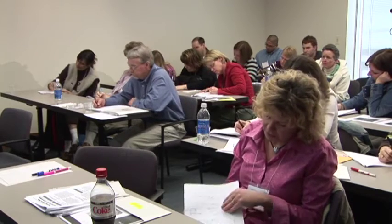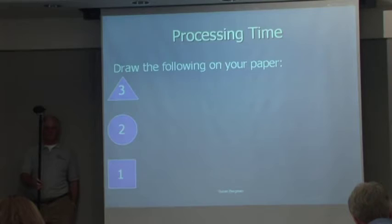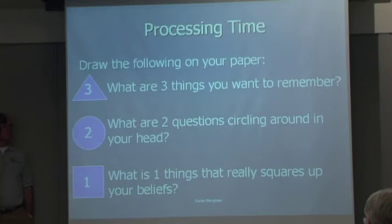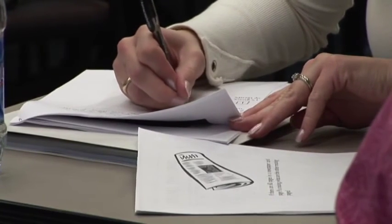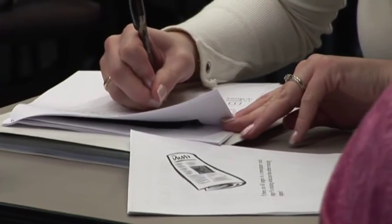We do need to do one last processing time. Draw on your paper: a triangle with a three in the middle, a circle with a two in the middle, and a square with a one in the middle. Next to the three: what three things do you want to remember from what you learned today? Next to the two: what are two questions still circling around in your head? And next to the one, the square: what is one thing that really squares up your beliefs? This is just some solo processing time for you.